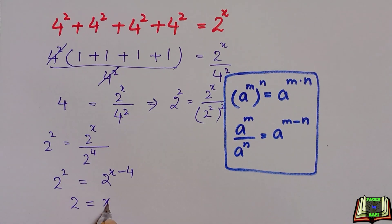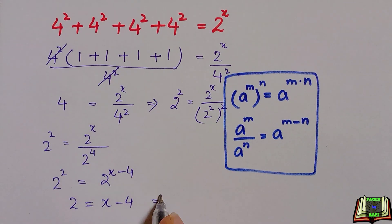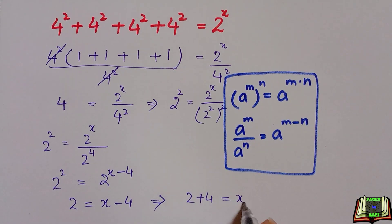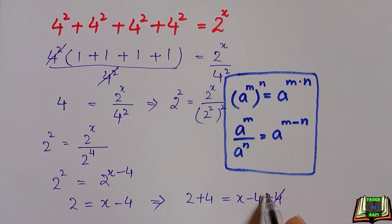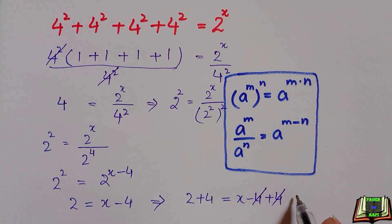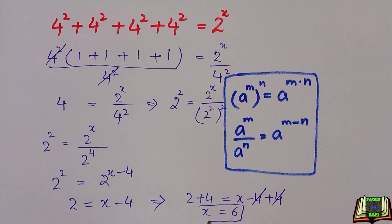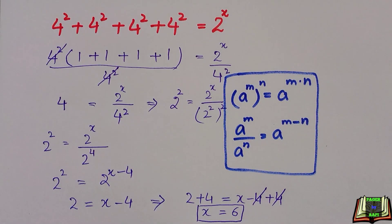Since the bases are the same and equal, they cancel out. We have 2 equal to x minus 4. Adding 4 on both sides gives 2 plus 4 equals x minus 4 plus 4, so the 4s cancel and we have the value of x equal to 6. This is the first method to find the value of x.